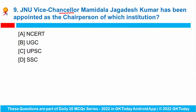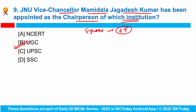Question number 9: JNU Vice Chancellor Mamidala Jagadesh Kumar has been appointed as the chairperson of which institution? He was appointed the chairperson of the University Grants Commission, and the Ministry of Education said the appointment has been made for a period of 5 years or until he turns 65, whichever is earlier. As per the National Education Policy, the Higher Education Commission would subsume regulatory bodies such as UGC and AICTE.